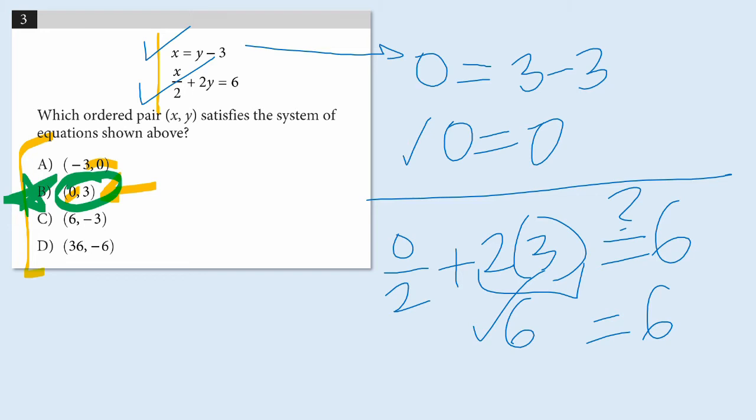So answer B is the correct solution. Now you can test the other three answers and you can see that, in fact, they won't make both equations true. But this problem is a good illustration that a strategy of just testing answer choices can quickly lead to the answer.